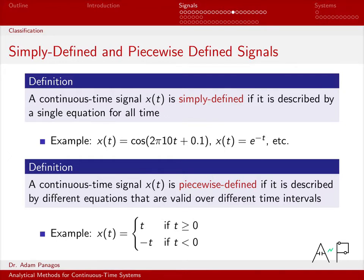So first of all, when we have a continuous time signal x of t that is simply defined, that means we can write it as a single equation for all time. For example, x of t equals cosine 2 pi 10t plus 0.1. If I write that down, just inherently, even without saying, we assume that is a signal valid from t equals minus infinity to infinity.